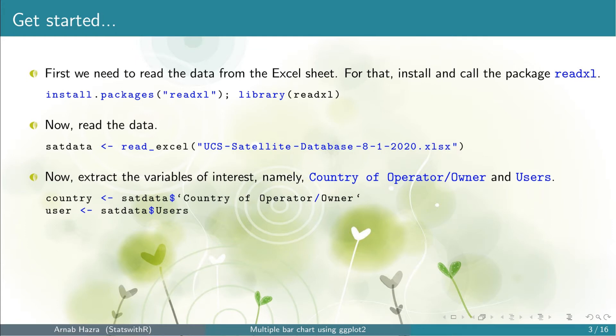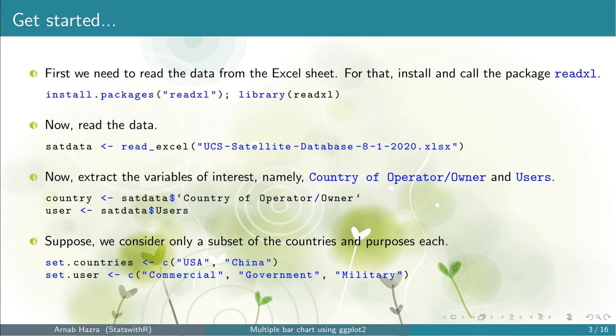The table sat_data includes 67 variables. Let's just focus on two of them: namely, country of operator or owner, and users — for example, commercial or military. Once we run the code, the two vectors country and user will be created. Now there are many countries in the list and also several users, so for the sake of illustration we pick the two countries with the maximum number of satellites and restrict ourselves to the users commercial, government, and military.